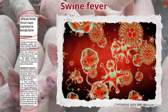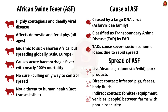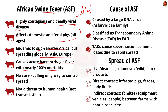African swine flu is a highly contagious and deadly virus. This disease affects both domestic as well as feral swines of all ages — feral meaning animals existing in a wild or untamed state. It is endemic to sub-Saharan Africa but has spread to many other regions including Asia and Europe. It leads to an acute form of hemorrhagic fever, and the mortality rate is nearly 100% because it has no cure. The only way to prevent further spread is killing the animals.